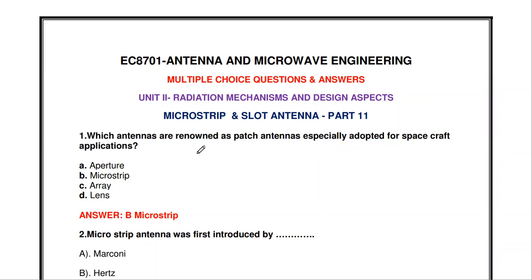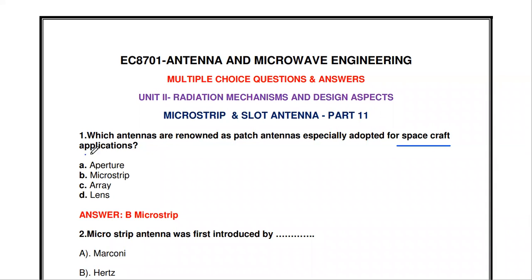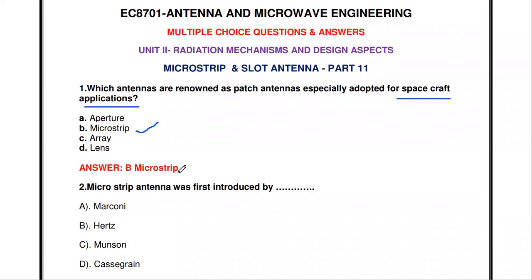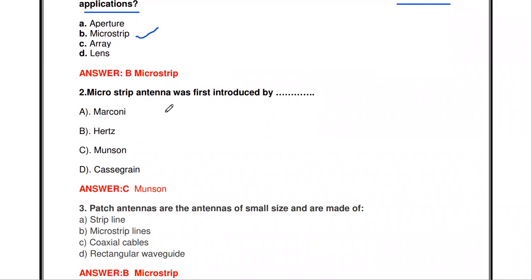The first question: which antennas are renowned as patch antennas and especially adopted for spacecraft applications? The options are aperture antenna, microstrip array, and lens antenna. The answer is the microstrip antenna, because of its very low weight and small size, it is used in spacecraft applications.